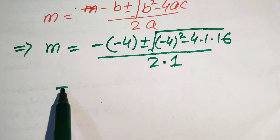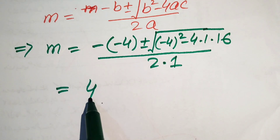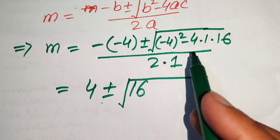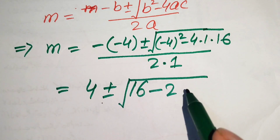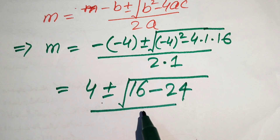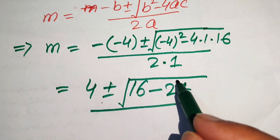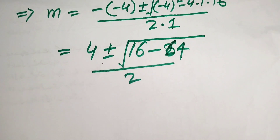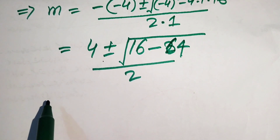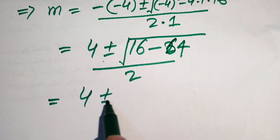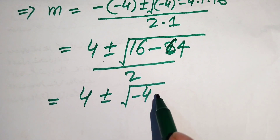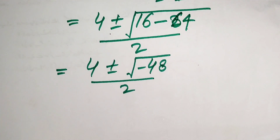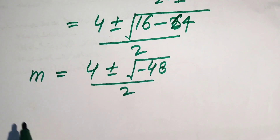Simplifying: minus times minus gives plus 4, plus or minus square root of (minus 4) squared equals 16, and 4 times 16 equals 64. So we have 4 plus or minus square root of 16 minus 64, which gives square root of minus 48, divided by 2.